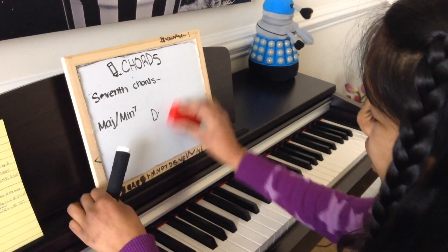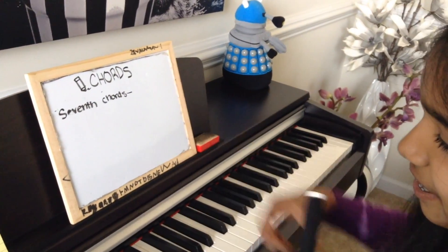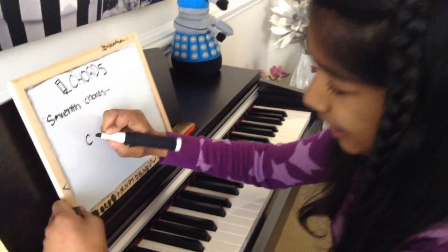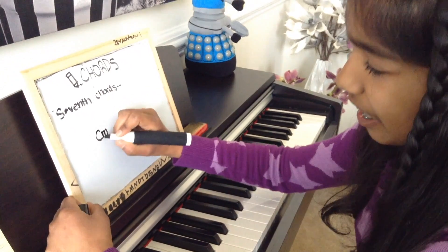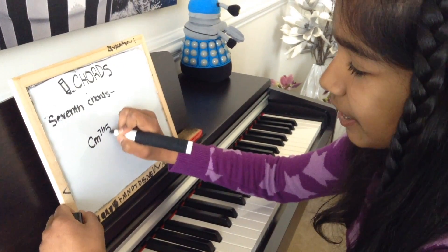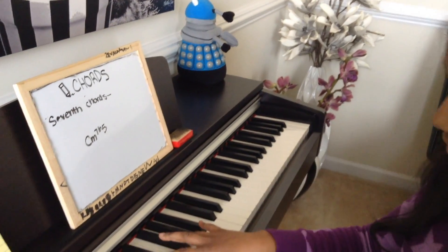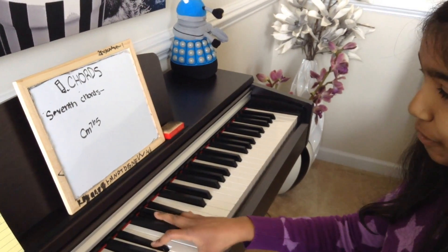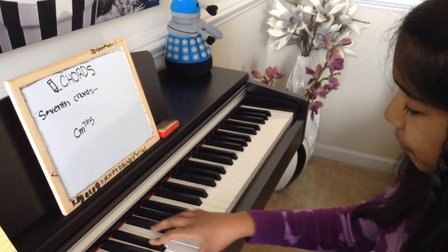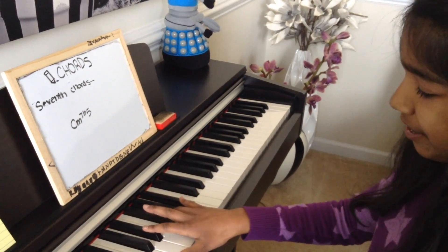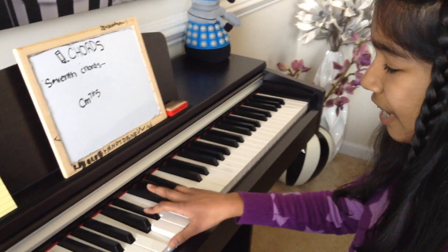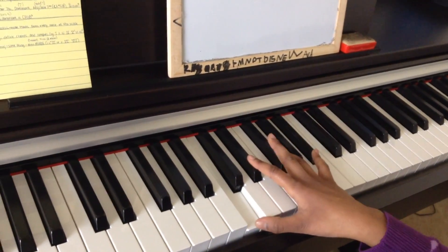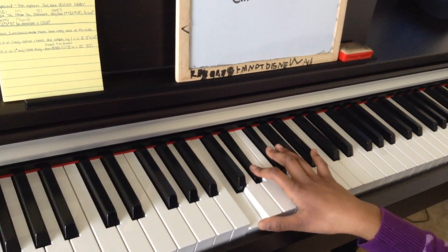Now let's talk about the half diminished seventh, written as m7 flat 5. It's basically your minor seven chord — in this case C minor seven — and then you move the fifth of the chord (G) down a half step to G flat. So you have C, E flat, G flat, B flat.